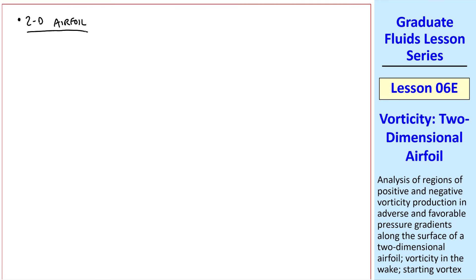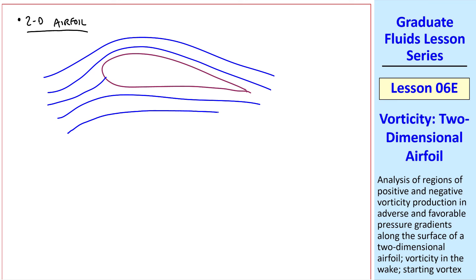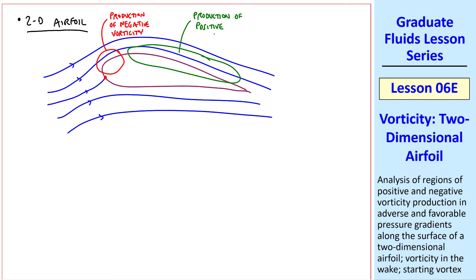Now let's look at the whole 2D airfoil. I'll sketch a case where there's a small angle of attack, so the streamlines look something like this around the airfoil. Here's the stagnation point. The flow accelerates here, which is a production of negative vorticity, and the flow decelerates here, which is a production of positive vorticity. Again, our signs are such that negative vorticity is clockwise, and positive vorticity is counterclockwise.